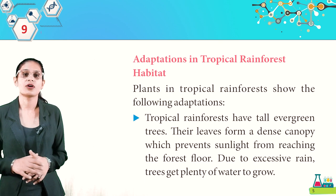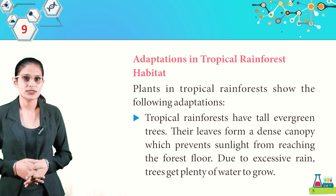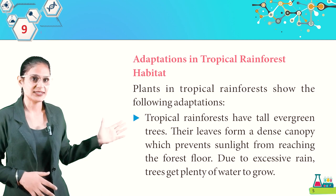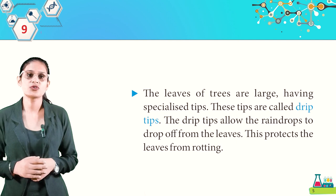Plants in tropical rainforests show the following adaptations: they have tall evergreen trees whose leaves form a dense canopy, preventing sunlight from reaching the forest floor. Due to excessive rain, trees get plenty of water to grow. The leaves are large with specialized tips called drip tips, which allow raindrops to drop off from the leaves, protecting them from rotting.